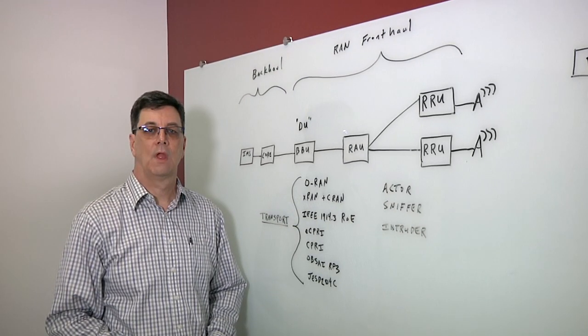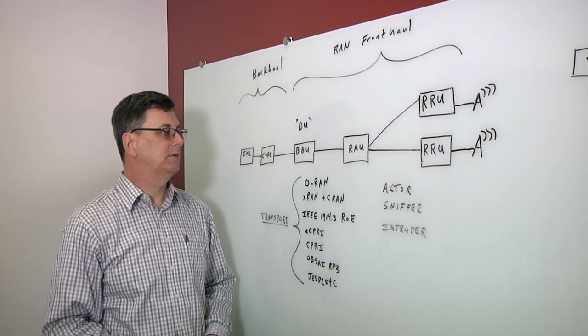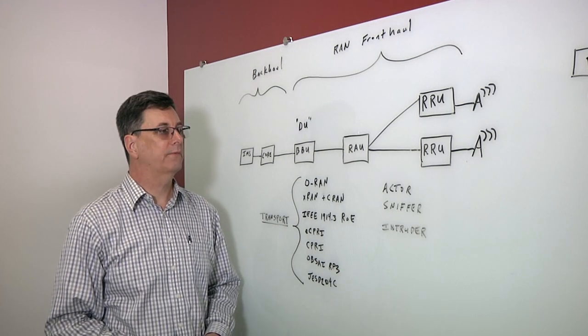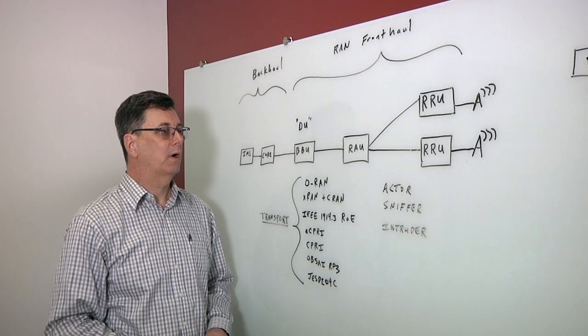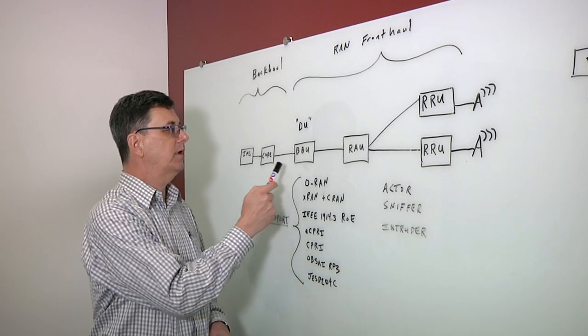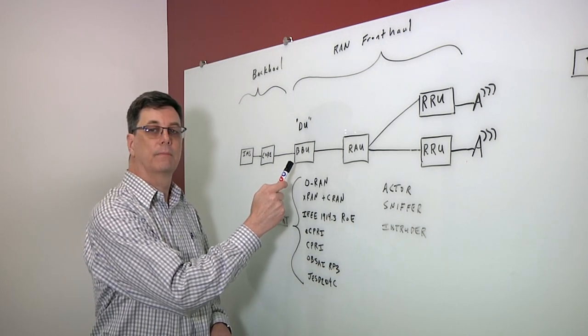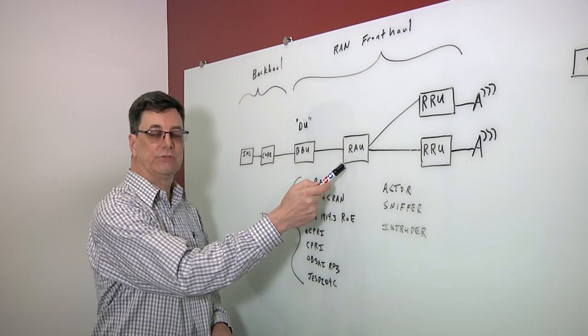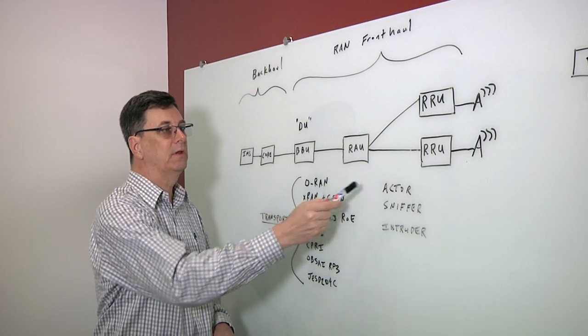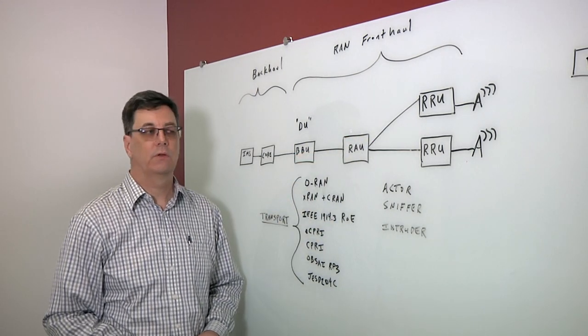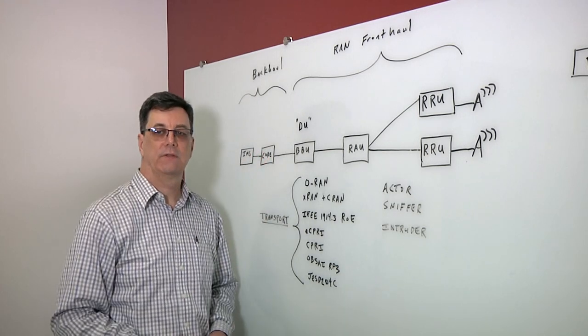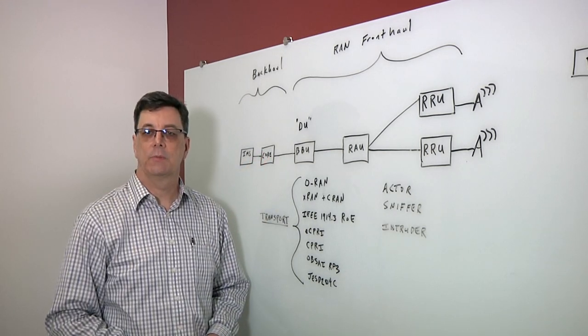So, Ron, what are we looking at here? Here, we're looking at a typical front hall network for 5G, where we have a core network followed by a baseband unit, potentially a radio aggregation unit, and then remote radio units that ultimately connect to antennas that radiate out to user equipment.